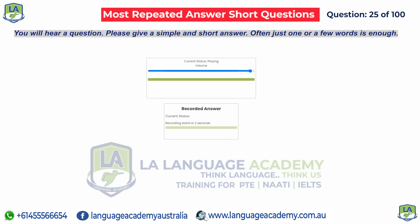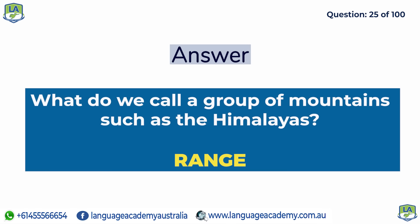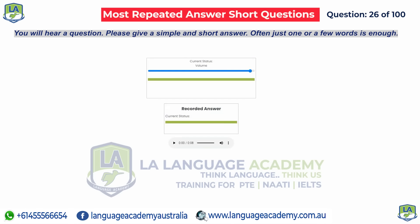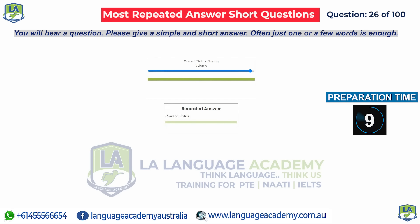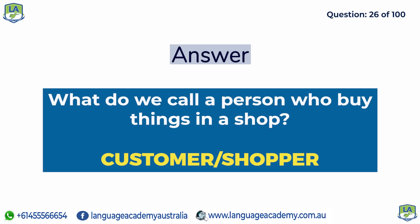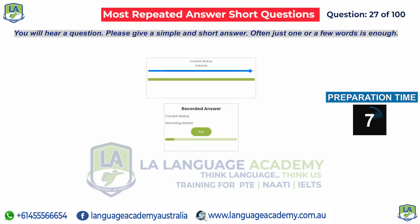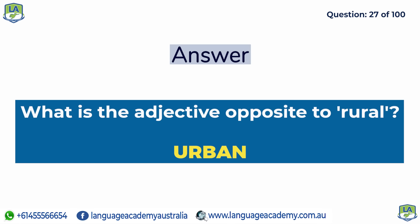What do we call a group of mountains such as the Himalayas? Range. What do we call a person who buys things in a shop? Customer, shopper. What is the adjective opposite to rural? Urban.